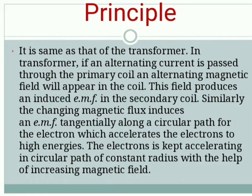Seeing into the principle, it is similar to that of the transformer. In a transformer, if an alternating current is passed through the primary coil, an alternating magnetic field will appear in the coil. This field produces an induced EMF in the secondary coil. Similarly, the changing magnetic flux induces an EMF tangentially along the circular path. This is how, with the increasing magnetic field, the electron gets accelerated in a circular path of constant radius.